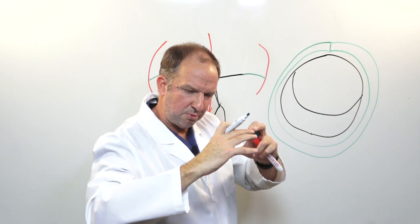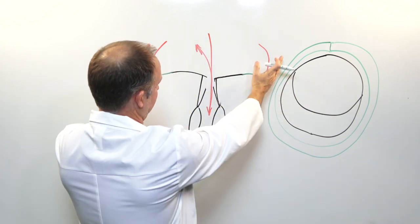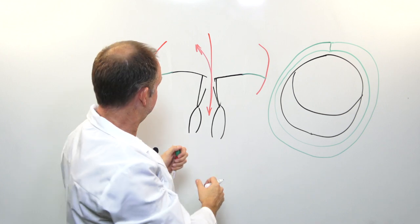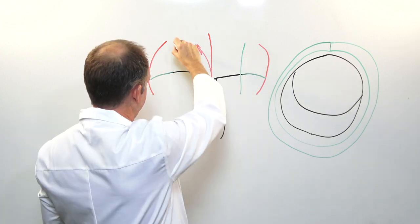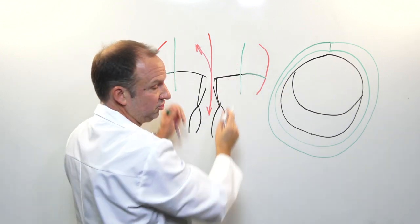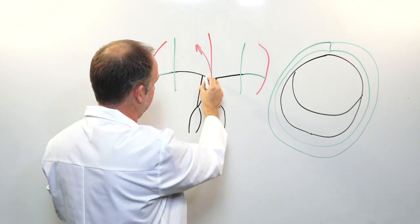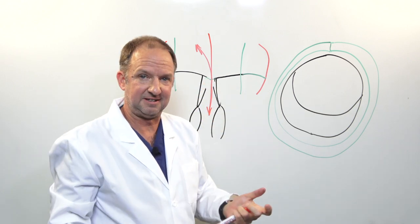It sort of brings everything back together so that way instead of the valve being stretched out like this, you re-establish the normal geometry of the valve, allowing for the mitral valve leaflets to kiss again.